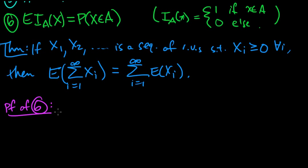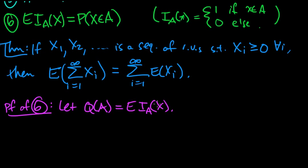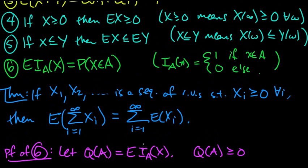Property 6 is a bit subtle. To prove it, define a measure Q on sets A as Q(A) = E[1_A(X)] — that left-hand side. To show Q is a measure: first, Q(A) ≥ 0 because an indicator function is always non-negative, and therefore by property 4, its expected value is also non-negative. So Q(A) is non-negative.